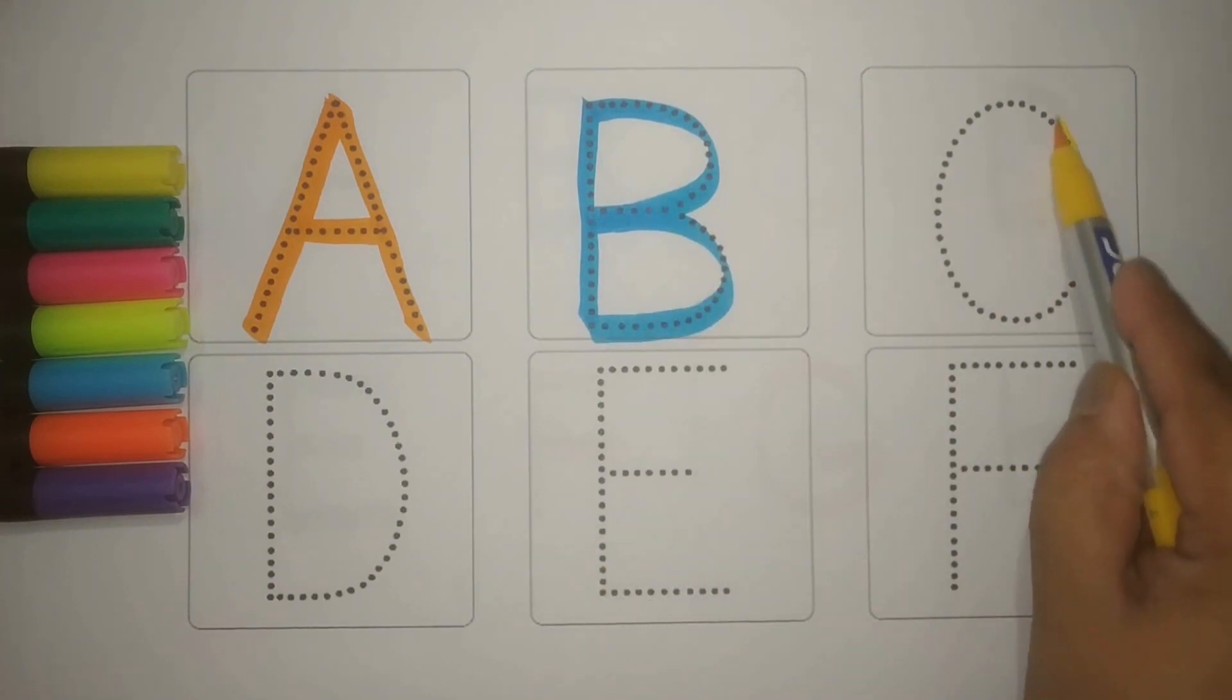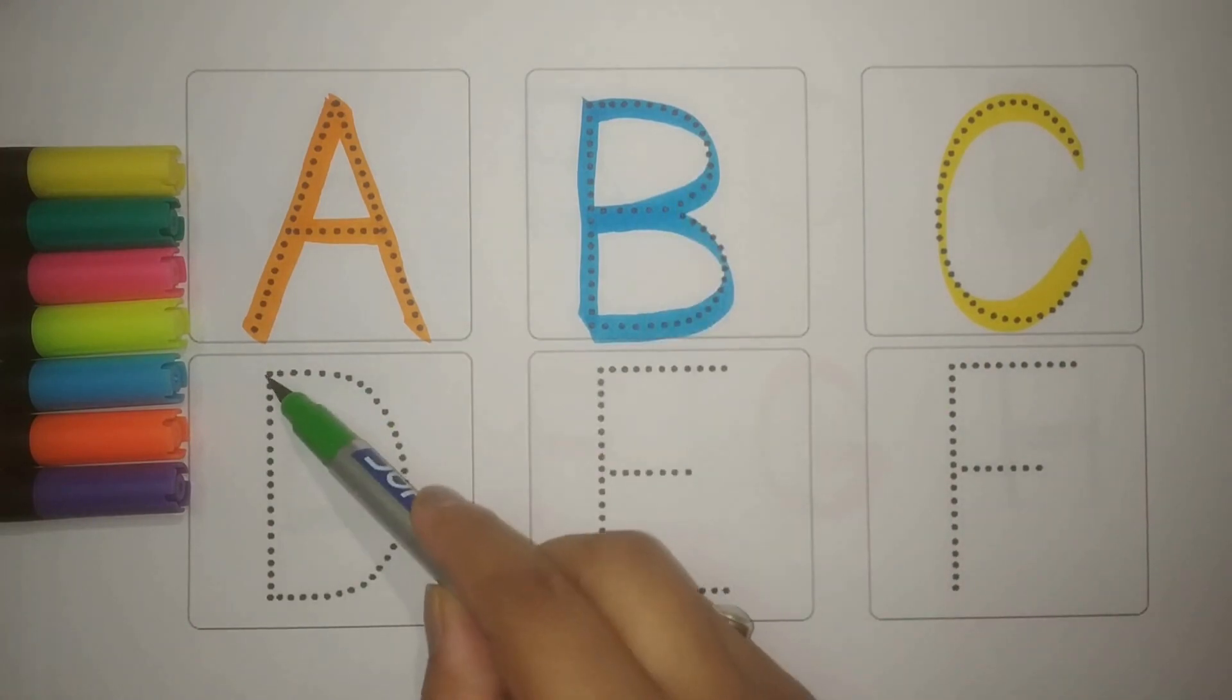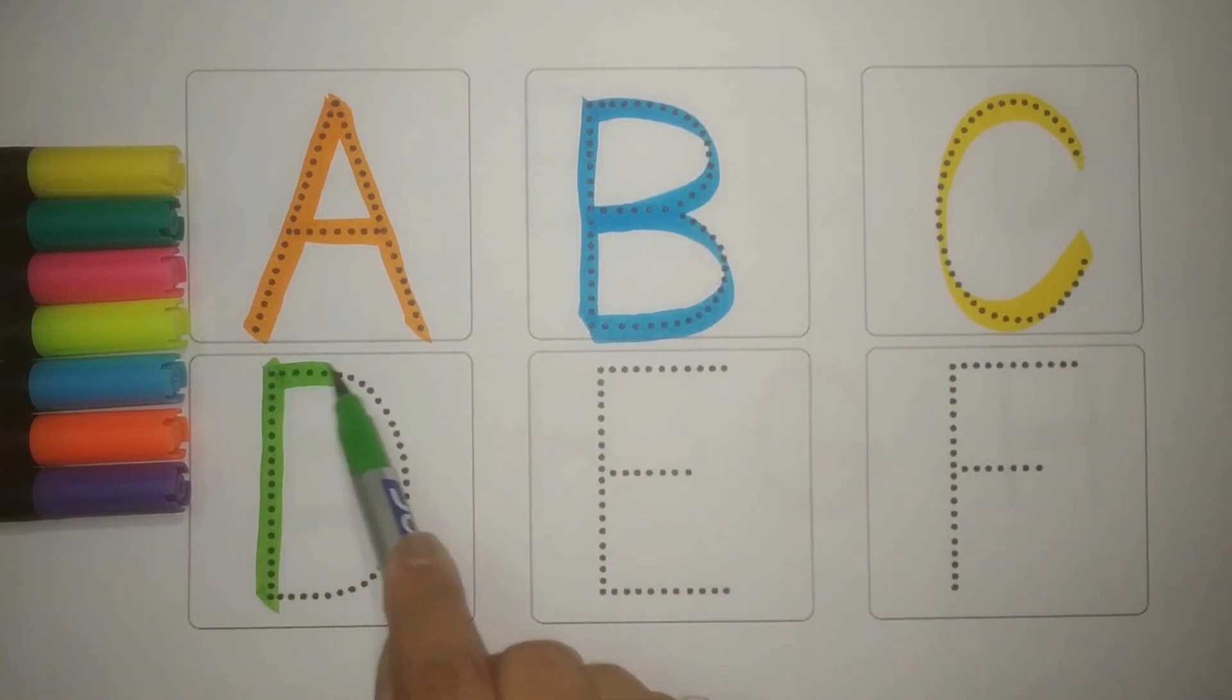Yellow C. C for Carrot, Gajar. Green D. D for Door, Darwaza.